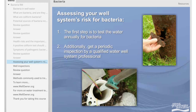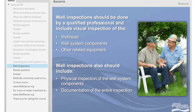It is important to assess the risk of your well system for bacterial contamination. The first and most important step is to test your water annually, at a minimum, for bacteria, and more often if symptoms indicate. Beyond a water test, you should get a periodic inspection by a qualified water well system professional. Consult with a professional as to when it is time to get a well inspection. An inspection should include a visual inspection of the well head, well system components, and other related equipment, as well as physical inspection of the well system components and documentation of the entire inspection.